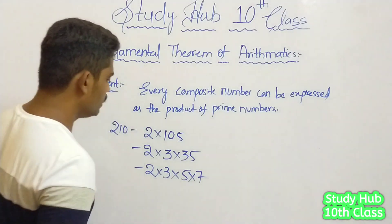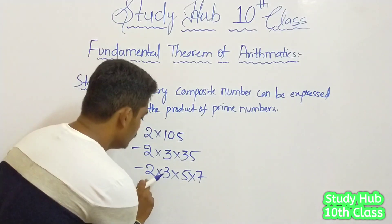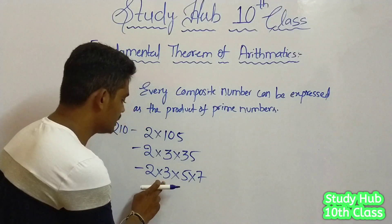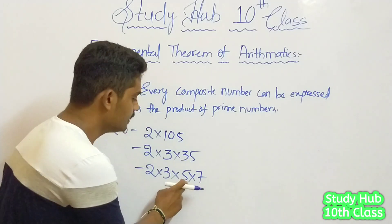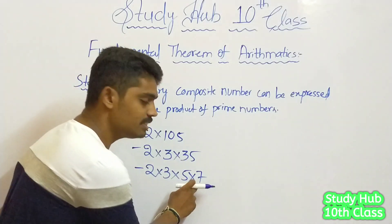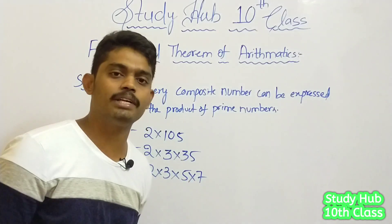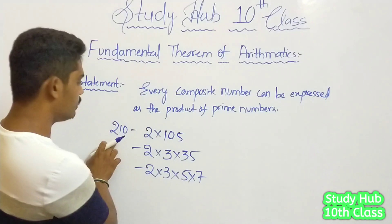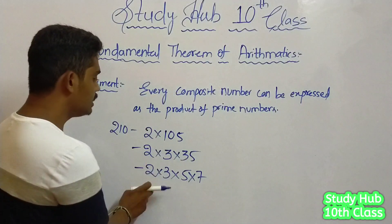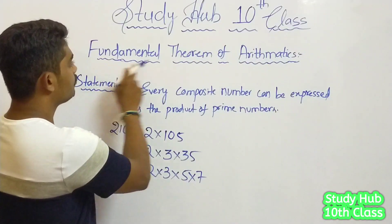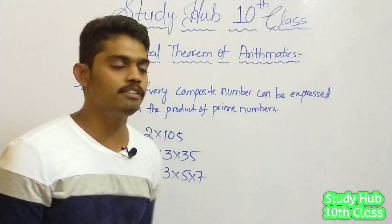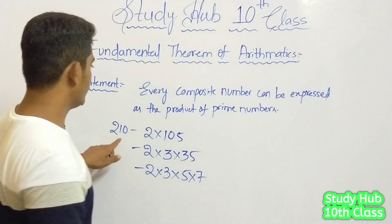Just multiply with me: 2 times 3 is 6, 6 times 5 is 30, 30 times 7 is 210. This is what the fundamental theorem of arithmetic explains, friends.